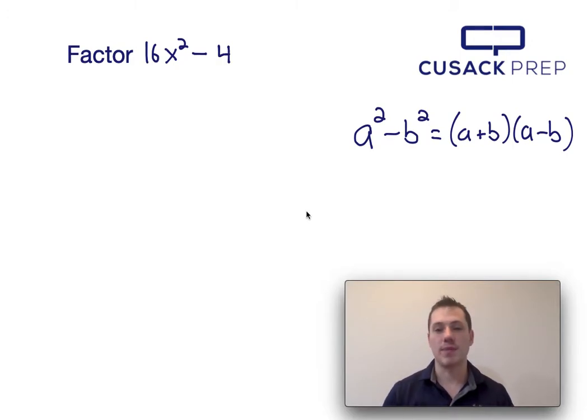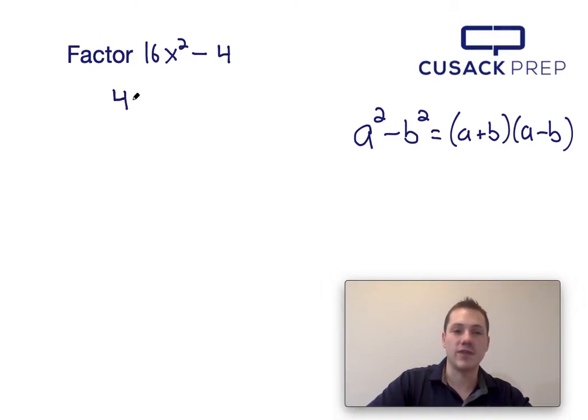Now when factoring 16x squared minus 4, the first thing I notice is that both 4 and 16 share a factor of 4. So I can start this by factoring out the greatest common factor, or 4 from both terms.